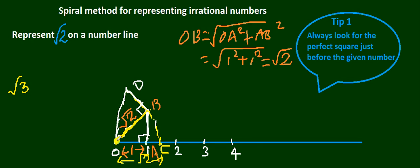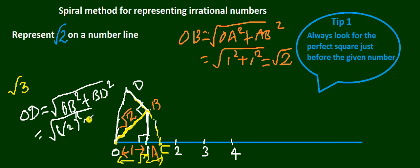So if you see OD, again Pythagoras theorem will be OD equals square root of OB square plus BD square, which will give me square root of root 2 square plus 1 square, which actually gives me root 3. So OD is root 3.